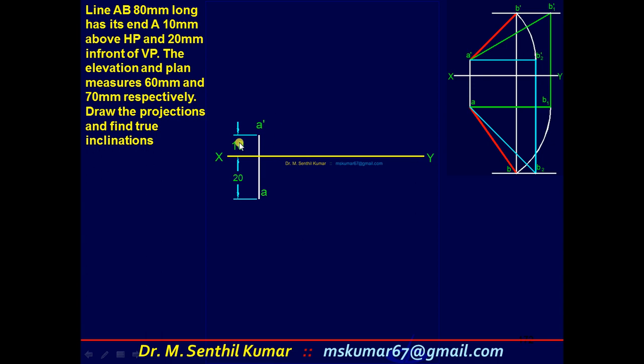Mark one end 10 above, 20 in front. Side by side, as I told you earlier, draw a dummy picture. In the dummy picture, try to mark the values from the question: 80, A'B1' is 80, AB2 is 80.